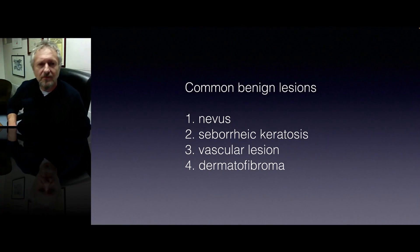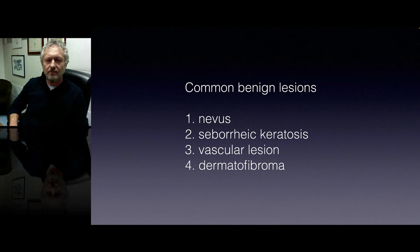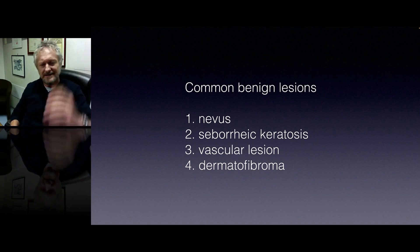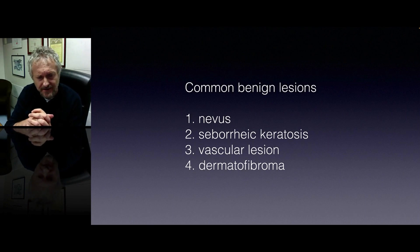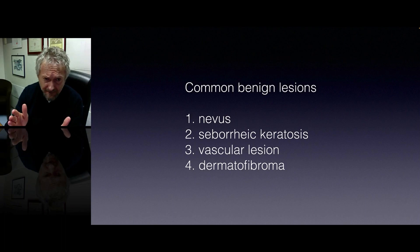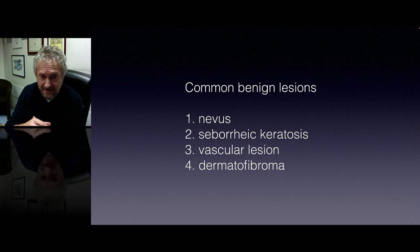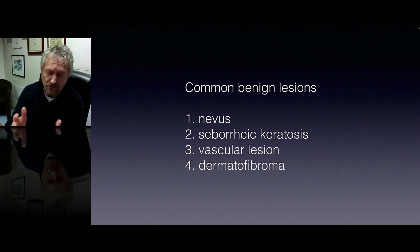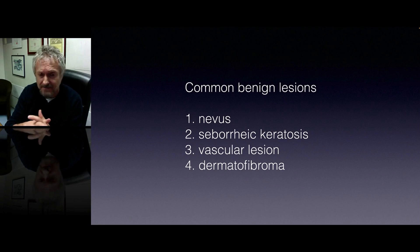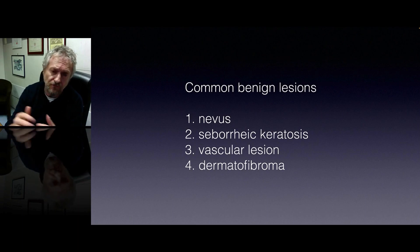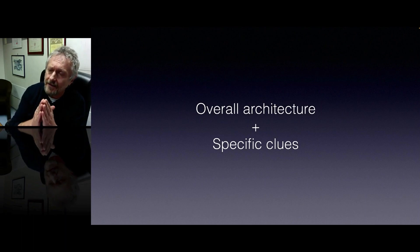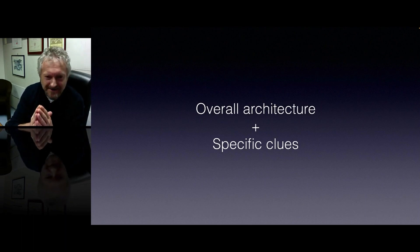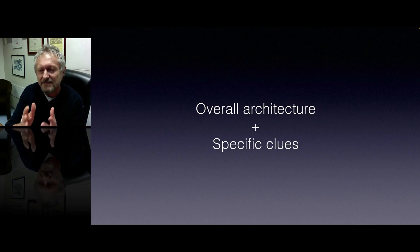Let's speak for a moment about common benign lesions. This is the list of the most common benign pigmented lesions that we can assess through our dermatoscope. Melanocytic nevi come in first place, then seborrheic keratosis — these are the two most common benign pigmented lesions — but also vascular lesions and dermatofibroma. What is the minimum requirement to assess benign lesions?